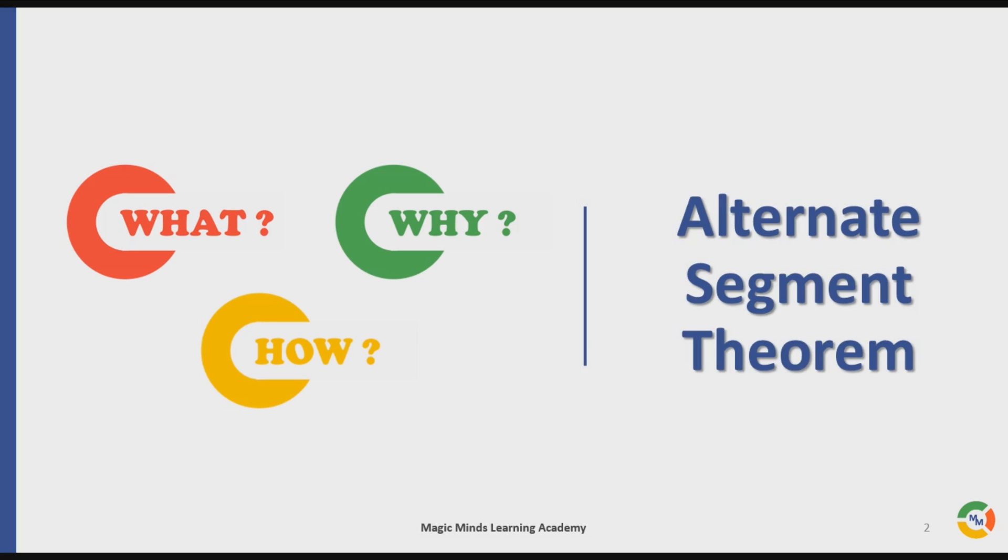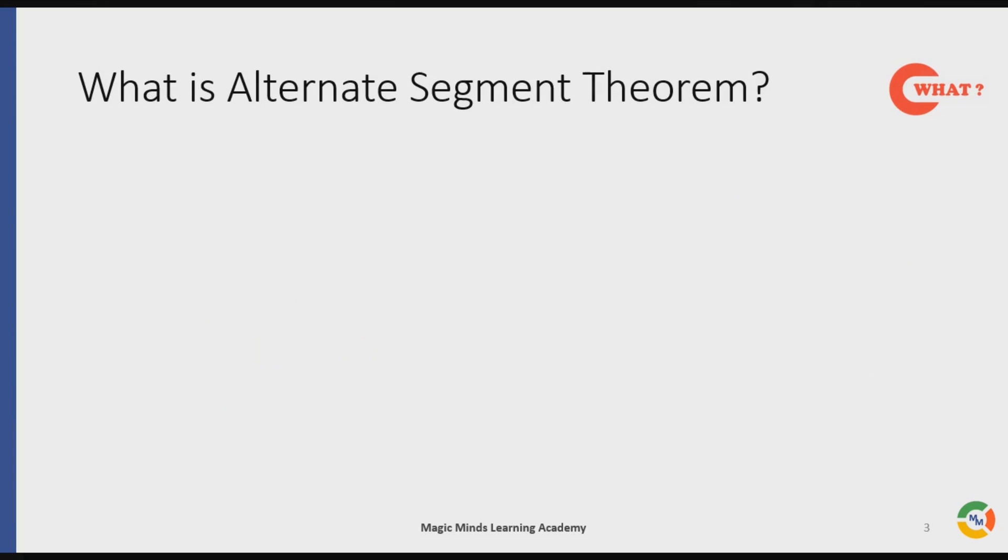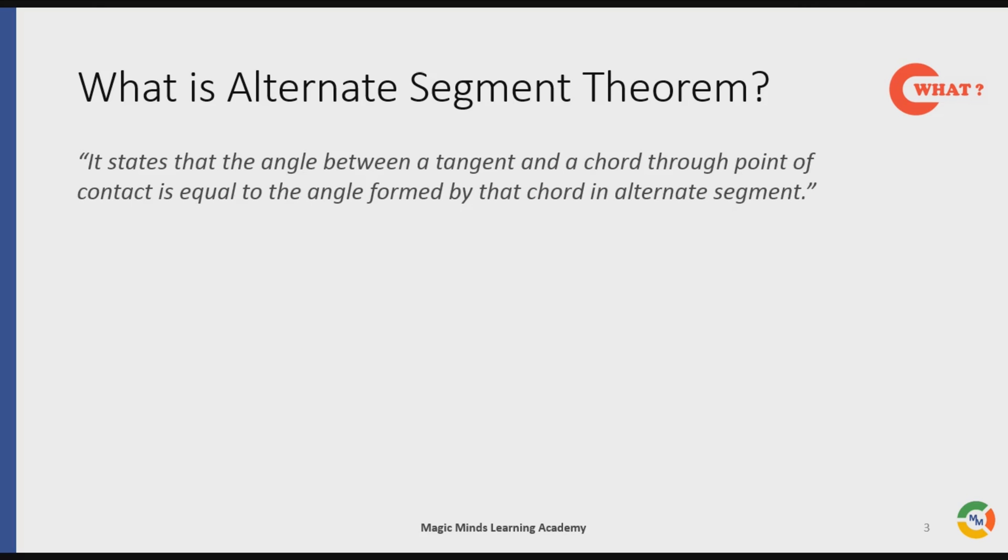Let's start with the what part. What is Alternate Segment Theorem? It states that the angle between a tangent and a chord through point of contact is equal to the angle formed by that chord in alternate segment. A few words need to be read carefully here: angle between tangent, chord, equal, alternate segment.